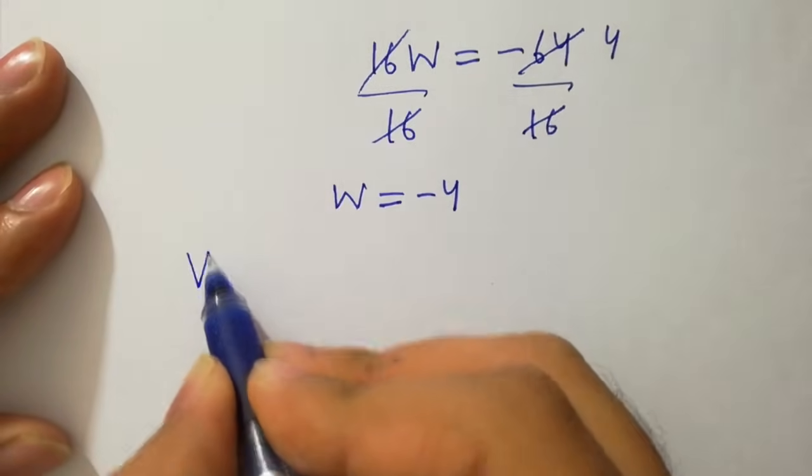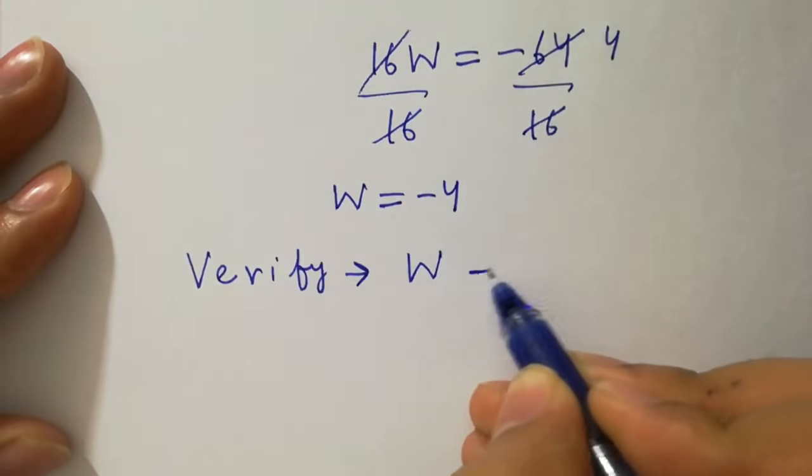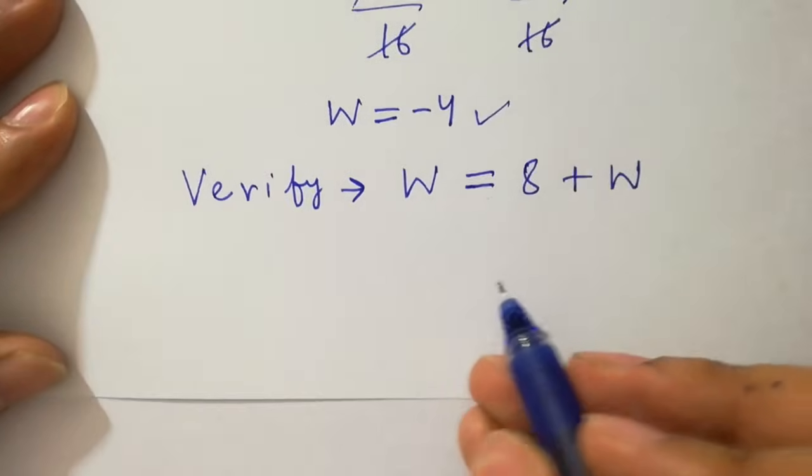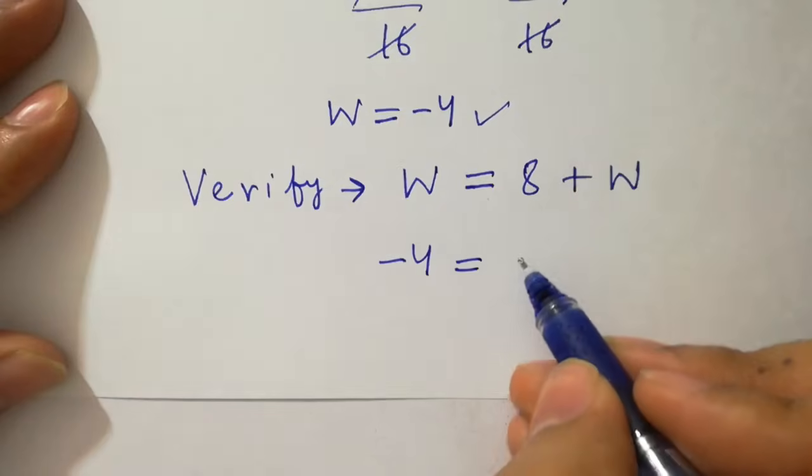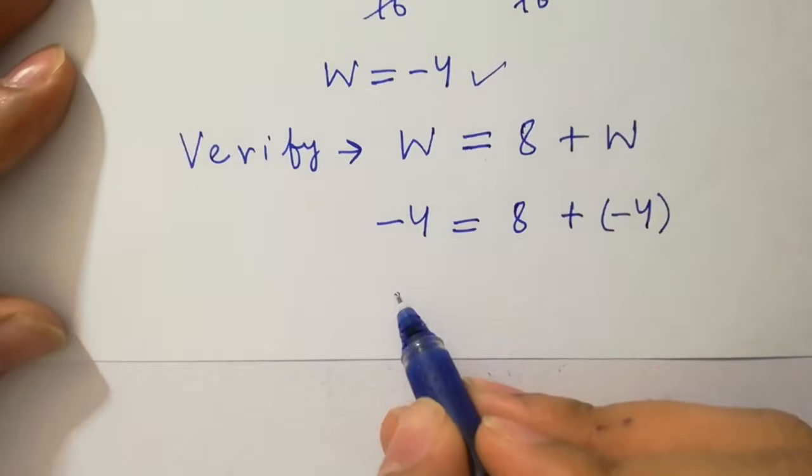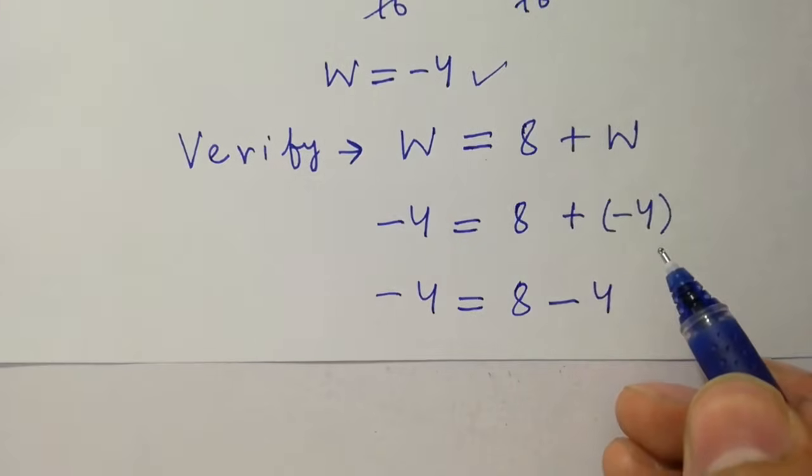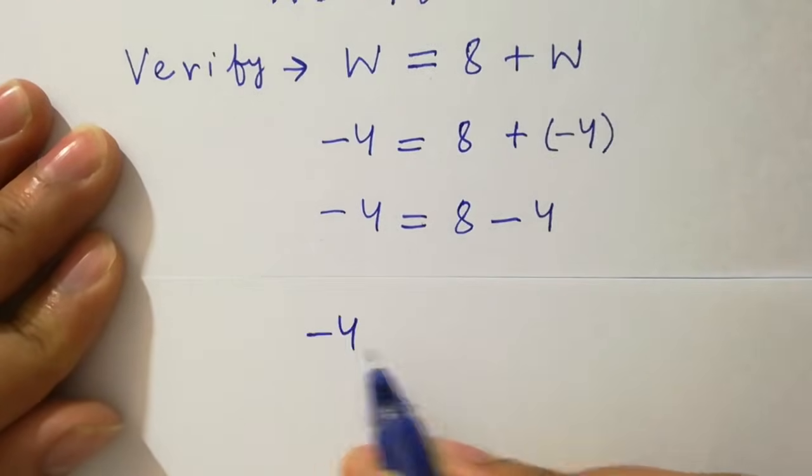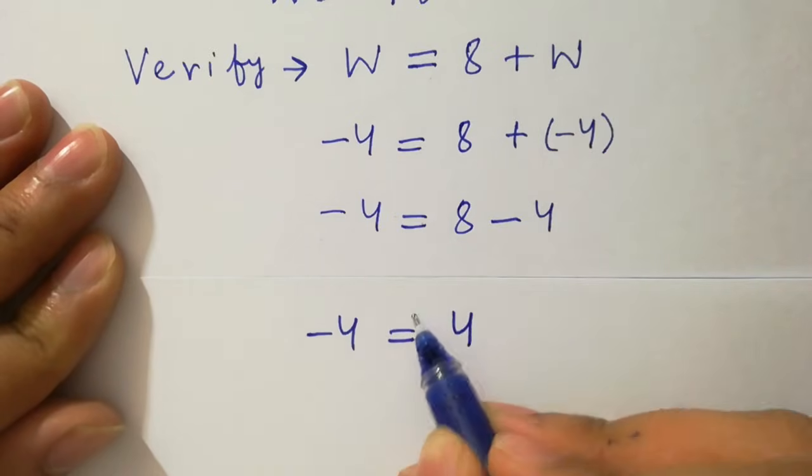In the next step I am going to verify w equals to 8 plus w. Put the value of w which is minus 4. We have here minus 4 equals to 8 plus minus 4. We have here minus 4 equal to 8 plus minus, we have minus 4. Next we have minus 4 equal to 8 minus 4 is plus 4. Minus 4 does not equal to 4, but why?